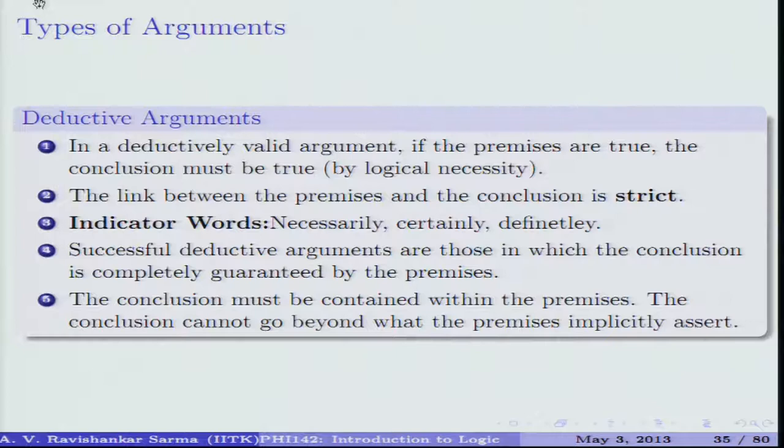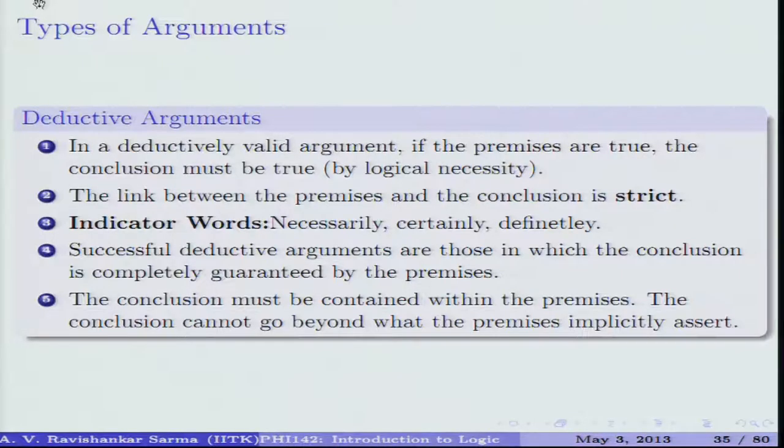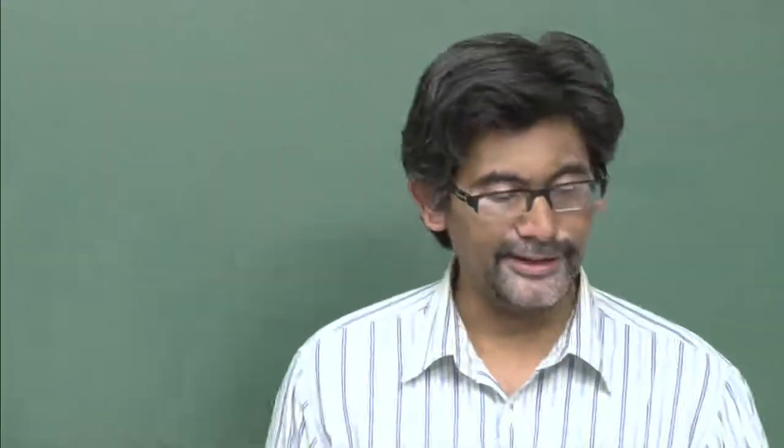So far, what we have said is that non-inferential passages are non-arguments, whereas inferential passages — whenever you find some kind of inferential claim in a given passage — we say that there is some kind of argument present. We will now move into the two different types of arguments: inductive and deductive. What is the definition of a deductive argument? Any argument consists of premises and a conclusion, and it depends upon how the premises lead to the conclusion.